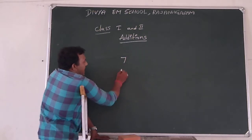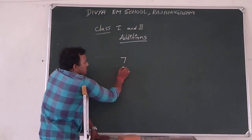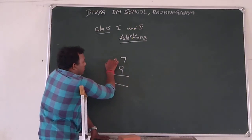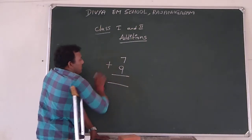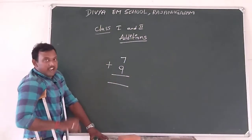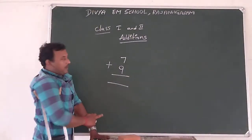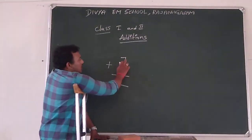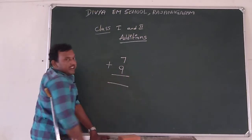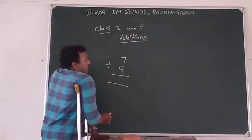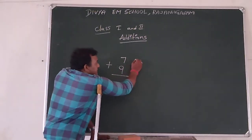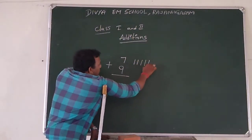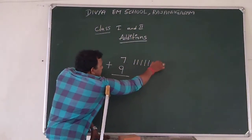Single digit addition. If we take 7 and 9. Don't forget to add plus here. Plus means addition. All of you remember, plus means addition. Now we are going to add 7 and 9. For 7, we are going to take 7 sheets: 1, 2, 3, 4, 5, 6, 7.